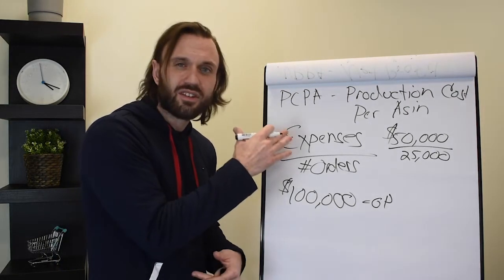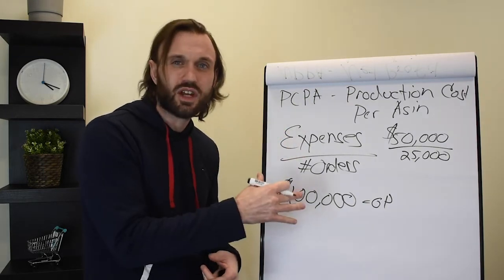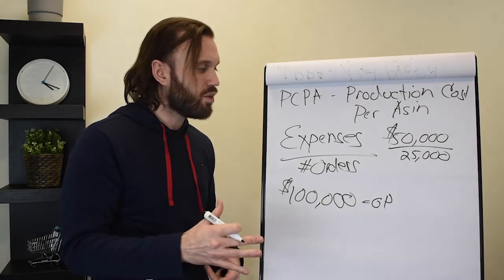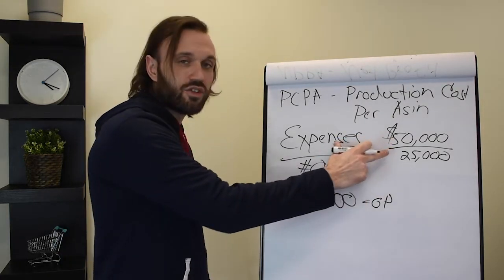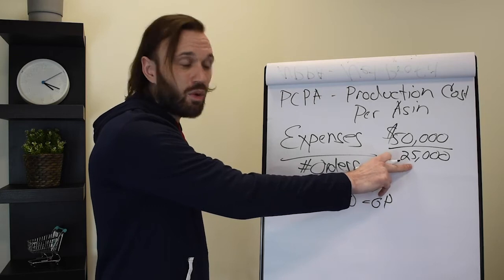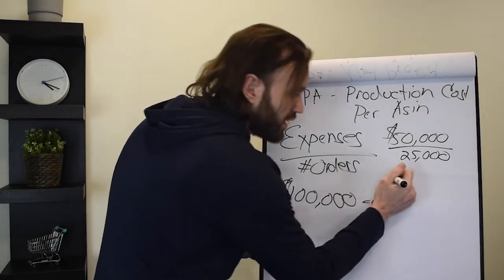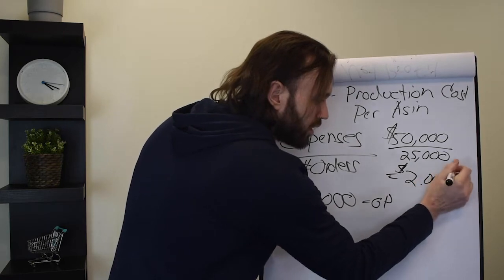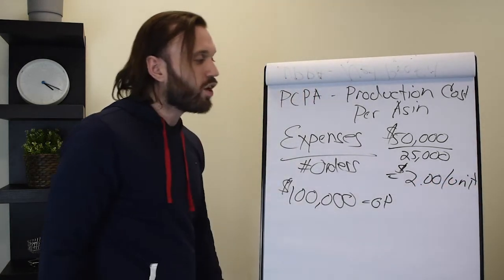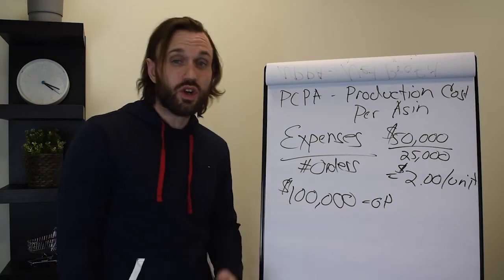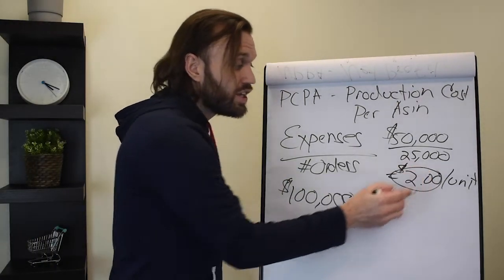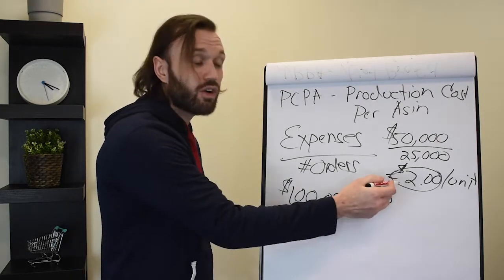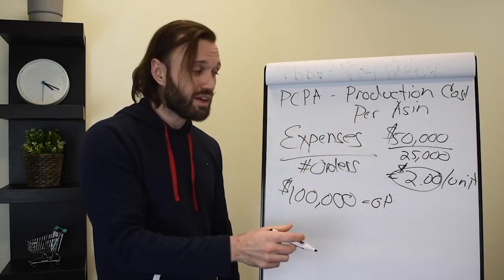And you would get your PCPA, your production cost per ASIN. What it costs you to get the product out the door, adding up all your expenses and dividing it by the amount of orders you sell that month or those 30 days. It's super important to have this number, your PCPA. It's game changer. Production cost per ASIN. Revolutionize the way you operate. So here, $50,000 in expenses divided by 25,000 in orders equals $2 per unit.